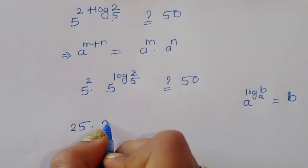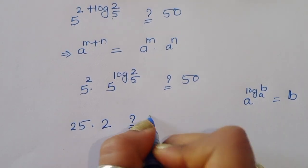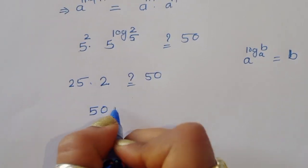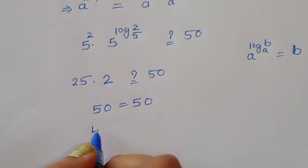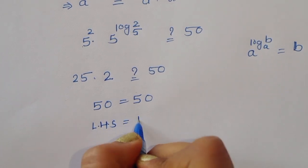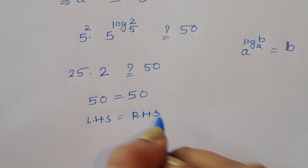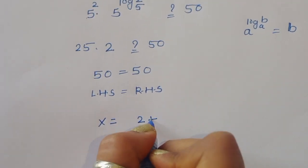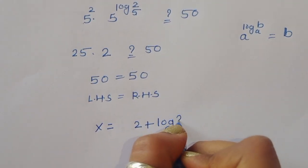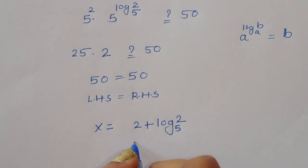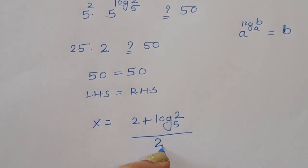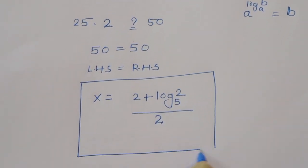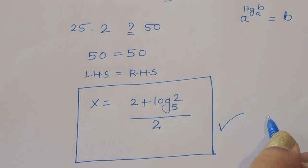So we have 25 times 2, which equals 50. LHS is equal to RHS. Therefore the value of x is equal to (2 + log₅2) / 2. This is the correct solution for this equation. Thank you.